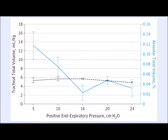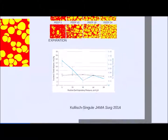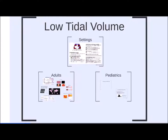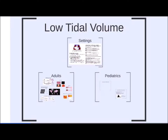In this rat model, PEEP 16 was probably the optimal strategy. The key caution is that the numbers you plug into the ventilator don't necessarily translate to what the alveoli and alveolar ducts — the real functional units of the lung — actually experience.